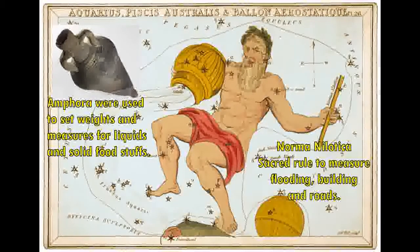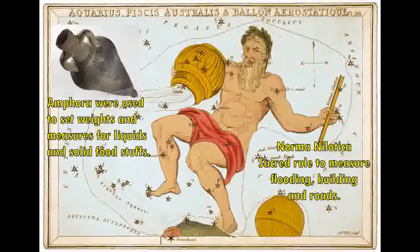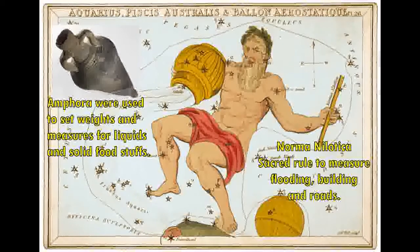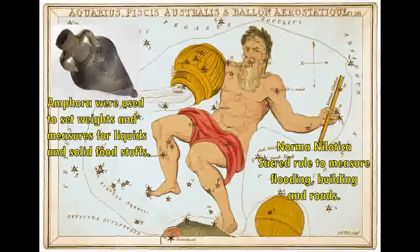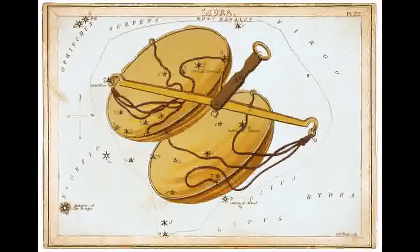Even in the constellations, which are themselves measured, the precession is another system of measurement and encoded knowledge. Aquarius, the water bearer, holds an amphora — amphoras were used as a sacred standard, filled with water to standardize liquid and dry measures such as grain and foodstuffs. He also holds a ruler, which was a sacred ruler used to measure flooding, buildings, and roads.